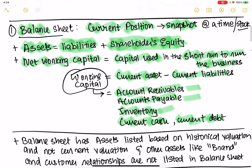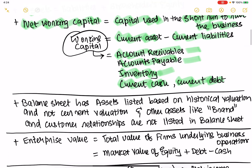A balance sheet has assets listed at historical valuation — that's the key. Remember, it's the acquisition price that's used, so the current valuation is not used, and that's a big gap.